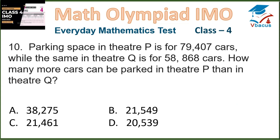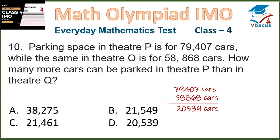Question 10. Parking space in theatre P is for 79,407 cars, while theatre Q is for 58,868 cars. How many more cars can be parked in theatre P than in theatre Q? We subtract: 79,407 minus 58,868 equals 20,539 cars, which is option D.